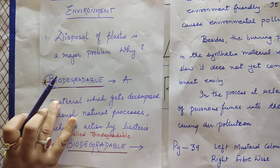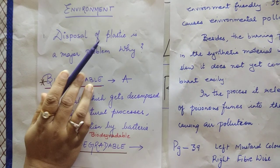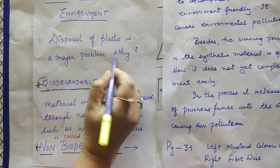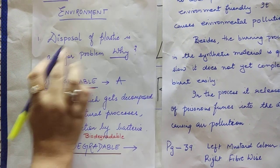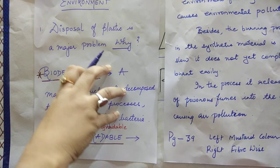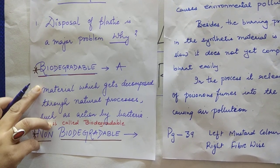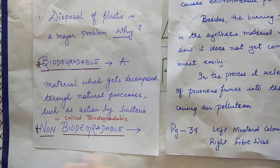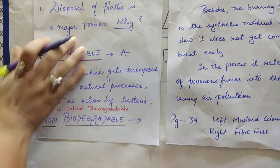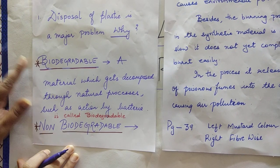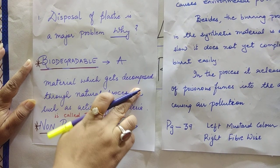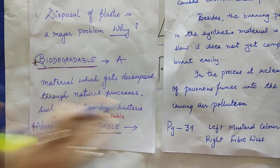So the major problem we come across is the disposal of plastic. The question arises: why is disposal of plastic a major problem? The major problem is that plastics are waste which falls under the category of non-biodegradable waste.